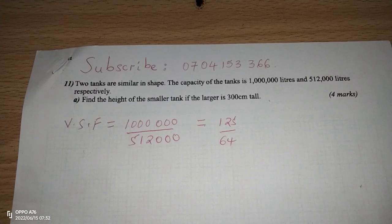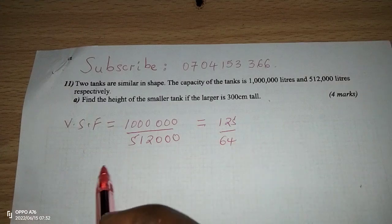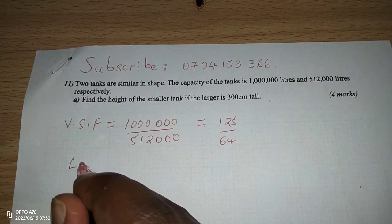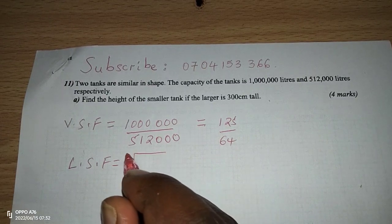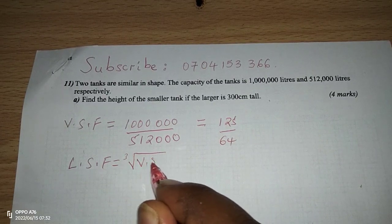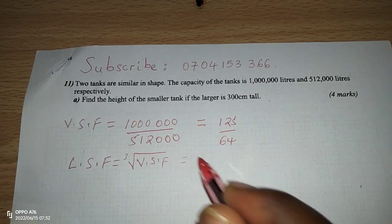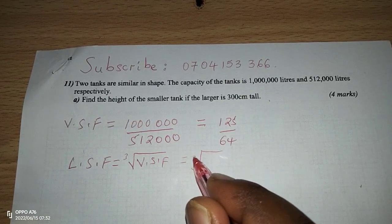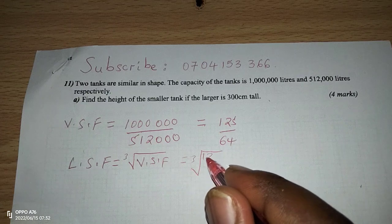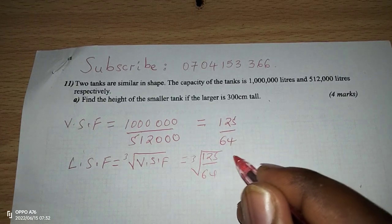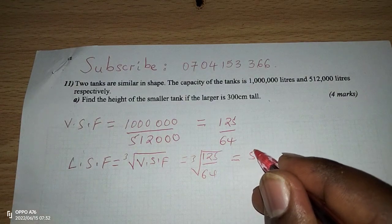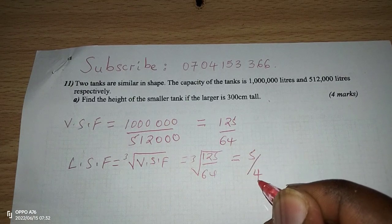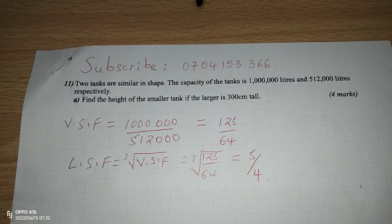We take the cube root because the linear scale factor is obtained by taking the cube root of the volume scale factor. Therefore we obtain the cube root of 125 divided by 64, and this gives us 5 over 4. Therefore this is the linear scale factor.